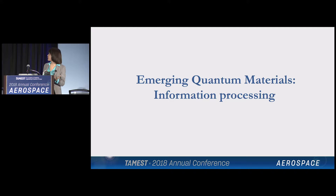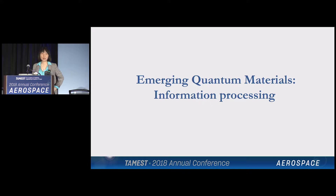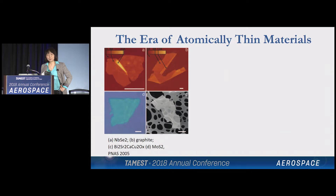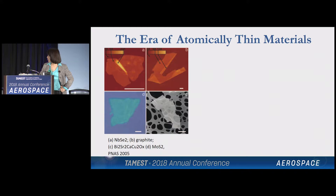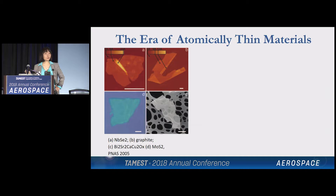Let me give you one particular example — one type of material we've been working with — that's at the level of atomically thin thickness and can have implications for future information processing technology. A lot of people in my field are obsessed with studying atomically thin materials. There's a very influential article from around 2005 showing that by using scotch tape you can actually isolate one monolayer thick materials. You can isolate many different kinds of material — they can be semiconductor, metal, or superconductor — giving us easy access to a wide range of materials.